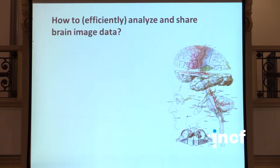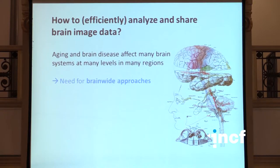The user perspective is important here. How as a user is one going to efficiently analyze and share image data from the brain? The perspective we have been taking is a system-level perspective, and since brain systems are widely distributed, and since aging and brain disease affects all these systems at different levels in many regions, we have seen a need for looking brain-wide in analysis. This brings on large collections of data that have to be managed somehow.